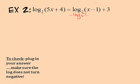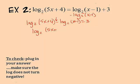I now have log base two of five x plus four minus log base two of x minus one equals three. Since they have the same base, I can condense this using quotient rule because there's a minus sign: five x plus four over x minus one equals three.